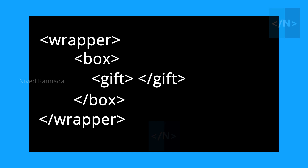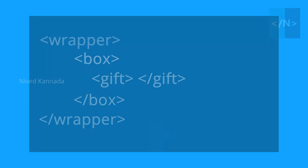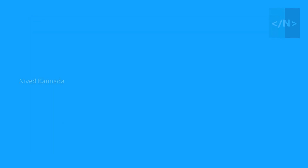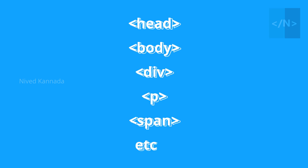Here we will see nesting and the parent-child relationship. The wrapper, gift box — this is a good idea. We are not seeing the tags on the web page directly; the actual HTML tags are head, body, div, span, etc.